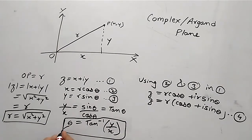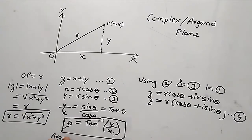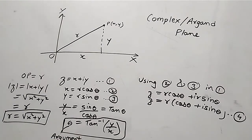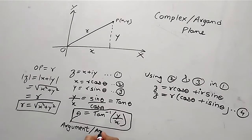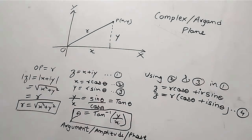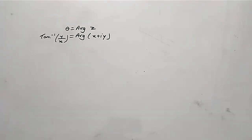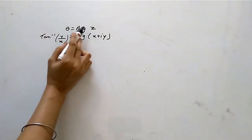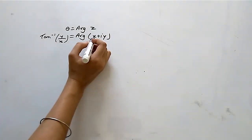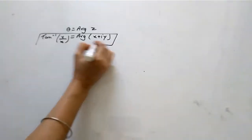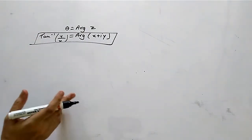You have to remember these two values: R is equal to under root of X squared plus Y squared, and theta is equal to tan inverse Y by X. This theta is called the Argument of the complex number — also called the Amplitude or Phase of the complex number. Argument of Z equals theta equals tan inverse Y by X, where Z is X plus iY. This is an important formula.